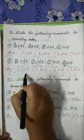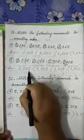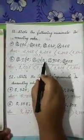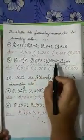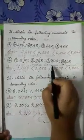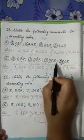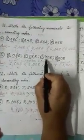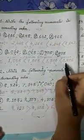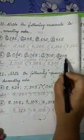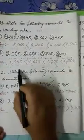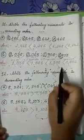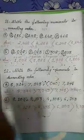So 1038 is the smallest numeral, next it will be 1083, then 1308 because its second digit is 3, and our greatest number will be 1803. In this way we can arrange numerals in ascending order. You can complete number C, D and E at your home.